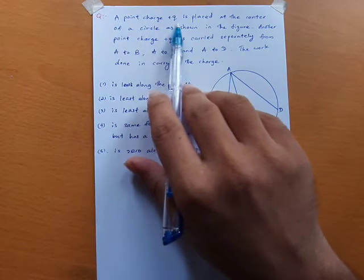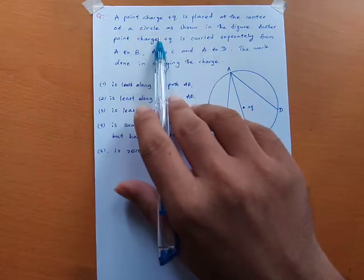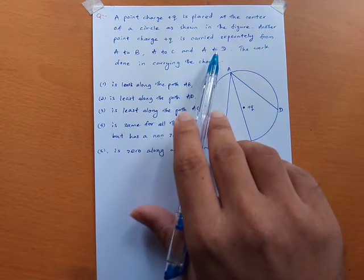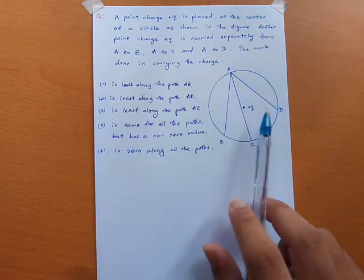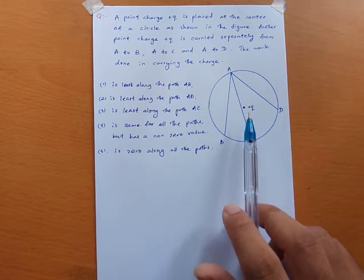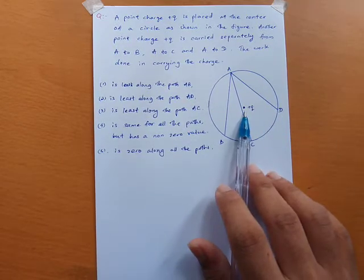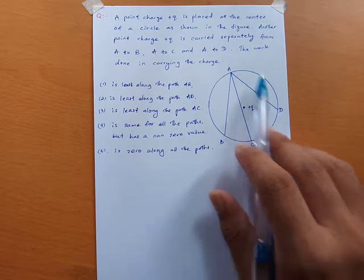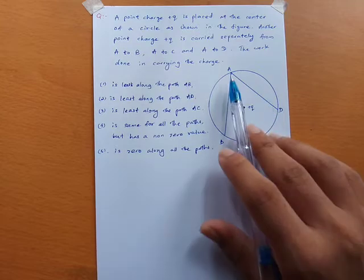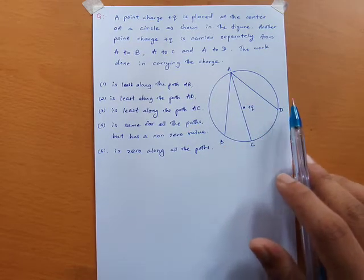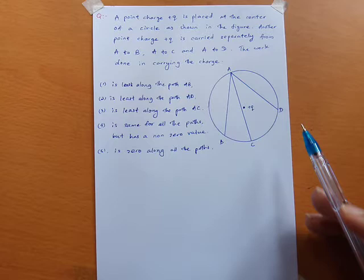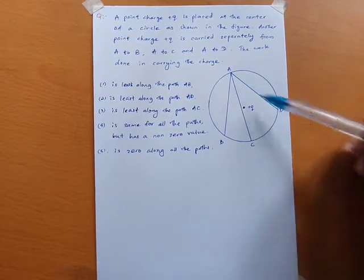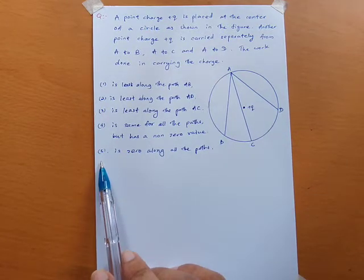A point charge +Q is placed at the center of a circle as shown in the figure. Another point charge +Q is carried separately from A to B, A to C, and A to D. Points A, B, C, and D lie on the circumference of the circle.